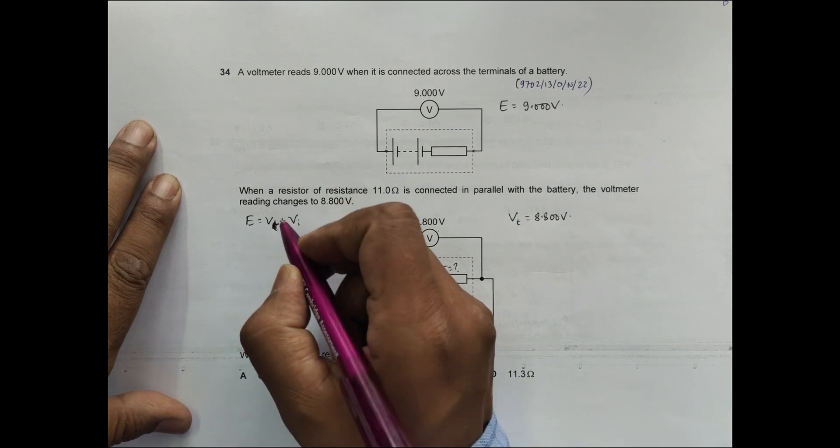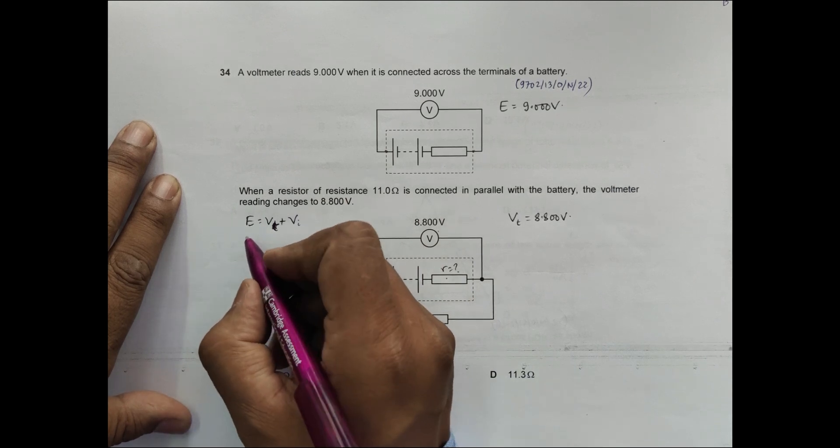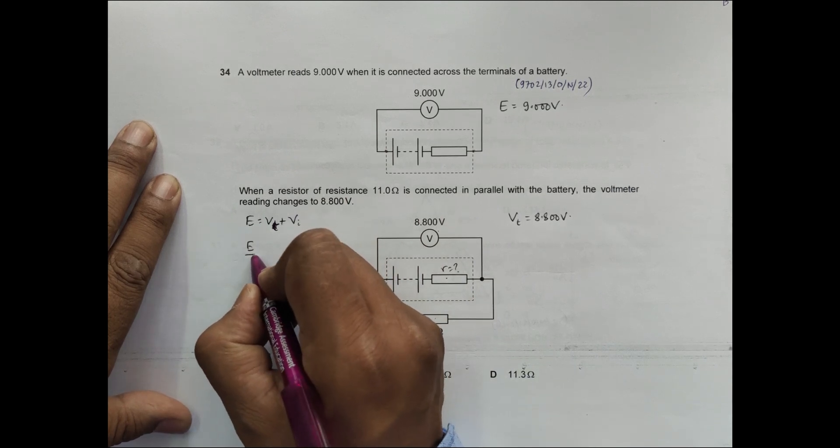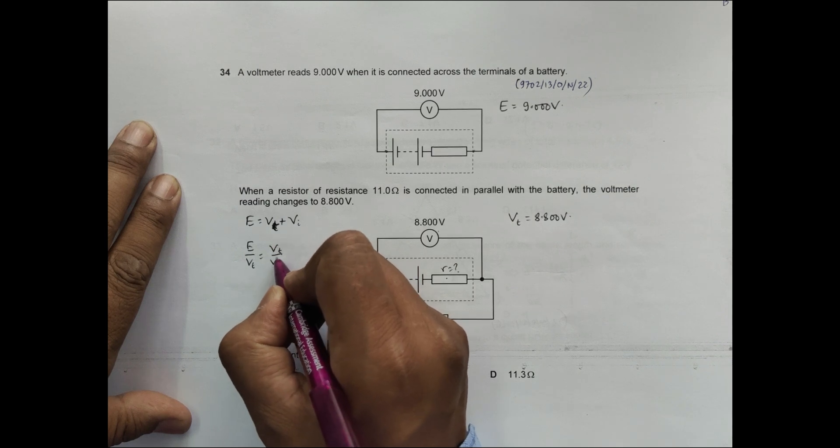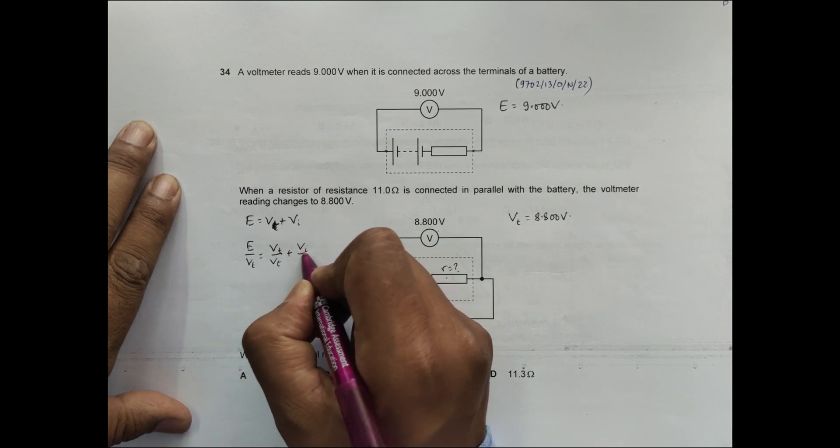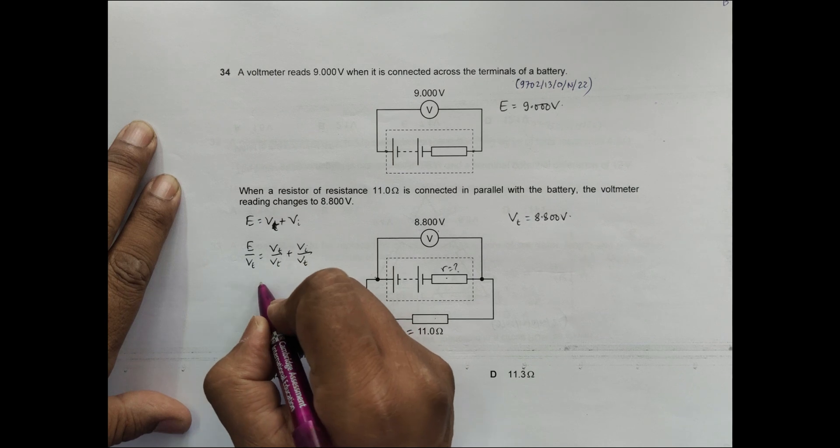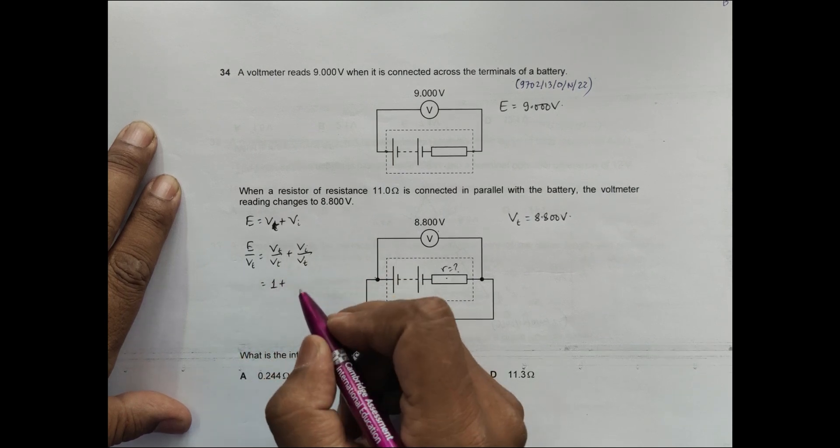If I divide the whole thing by V_T, it becomes E by V_T is equal to V_T by V_T plus V_I by V_T. So this is equal to 1 plus V_I by V_T.